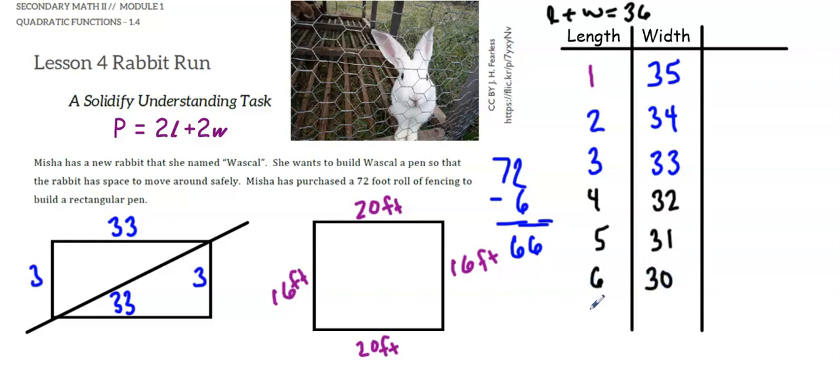If my length was x, my width would be 36 minus x.